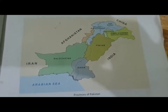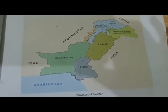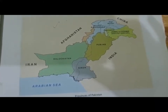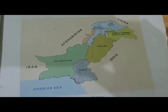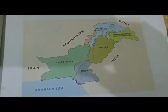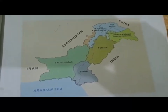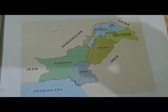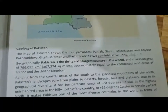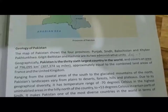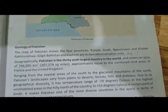When we talk about Pakistan, there are four provinces: Punjab, Sindh, Balochistan, and Khyber Pakhtunkhwa. There are also two administrative units: Gilgit Baltistan and Azad Kashmir. Administrative units are areas that have their own government and follow their own rules. Geographically, Pakistan is the 36th largest country in the world, with a total area of 796,095 square kilometers.